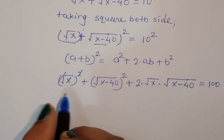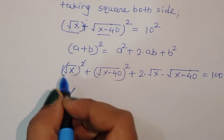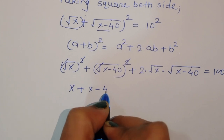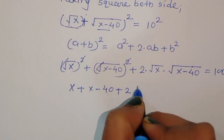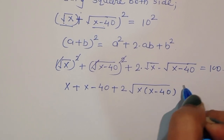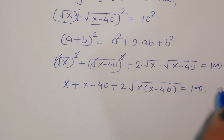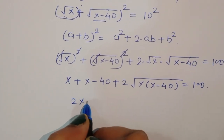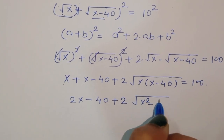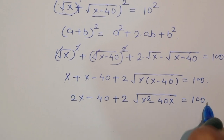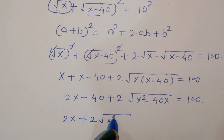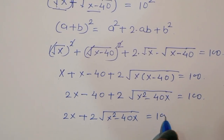Now, the square and square root cancel each other. We can write x plus x minus 40, plus 2 times square root of x squared minus 40x, is equal to 100. That gives us 2x minus 40 plus 2 times square root of x squared minus 40x is equal to 100.